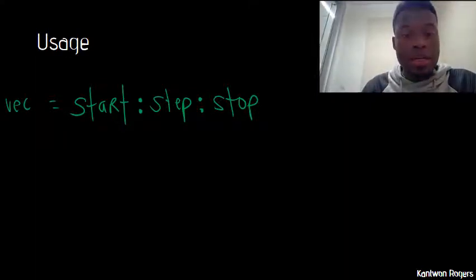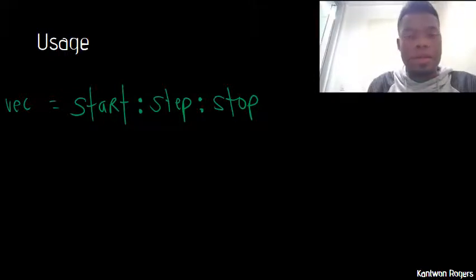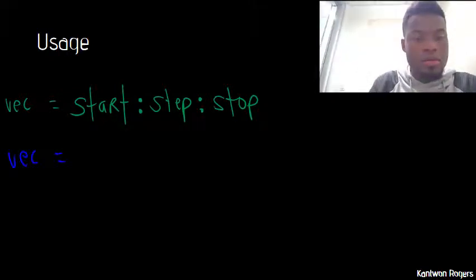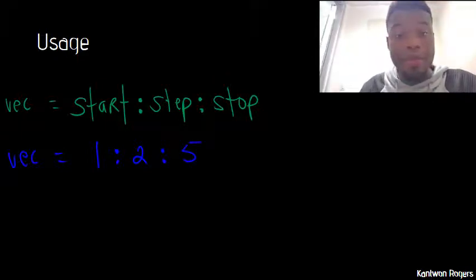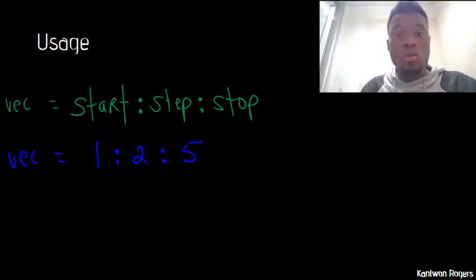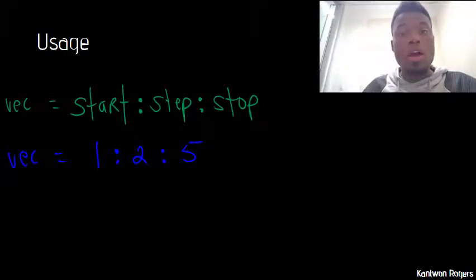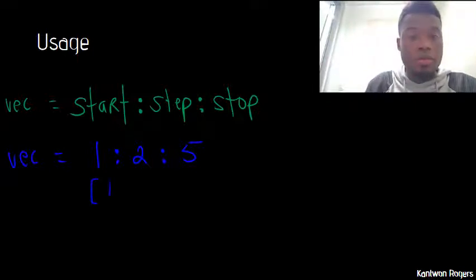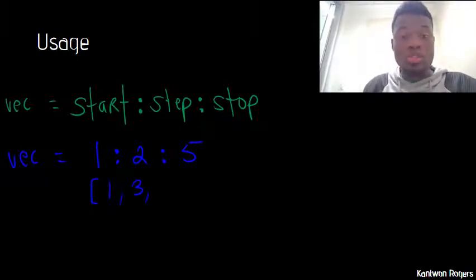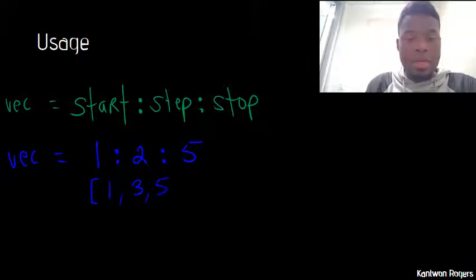So for instance, let's say I had something like vec is equal to one colon two colon five. So what this is saying is I want to start at the number one and each successive number needs to be two more than the one before it. And we want to keep on going until we get to the number five. So therefore, this would start at one. Then it adds two to one. So the next number we get is three. Then it adds two to three. Then the next number we get is five.